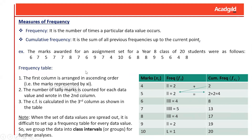The steps involved are: first, sort the data values in ascending order, noted by xi. Second, perform a tally count of each data value — the tally count gives us the frequency. Third, the cumulative frequency is calculated from the frequency column. The cumulative frequency for the first row is the frequency itself; for the second row it is the sum of the first row's cumulative frequency and the second row's frequency. The cumulative frequency for the last row equals the total number of observations, which validates our definition.